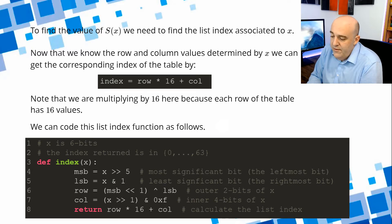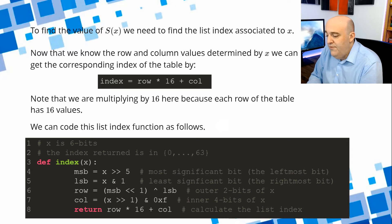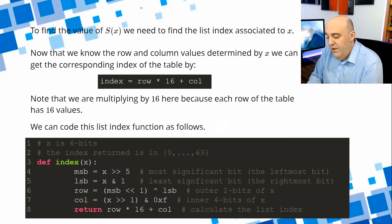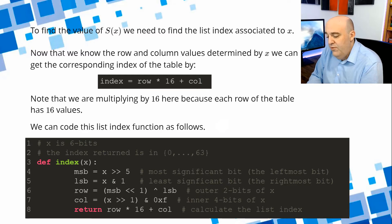Let's define a little function called index. X, the input, is a six-bit integer between 0 and 63, and the index is also an integer between 0 and 63 telling us where to look in the list to find the value of S of X. The most significant bit is accessed by right-shifting X by 5. The least significant bit is X AND 1. The row is the MSB shifted left by 1, then OR the LSB to get a 2-bit value. The column is X right-shifted by 1, then ANDed with 0xF to knock off the MSB. The index is row times 16 plus column.